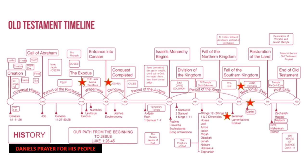Ultimately God would allow them to go into the promised land, the land of milk and honey. But God gave them requirements: kill off the Canaanite people, don't intermarry with those people, and don't embrace those gods. But they did the contrary. It would ultimately lead into the period of Judges, where they would sin and fall short of God's requirements. God would send judges over and over again for hundreds of years.